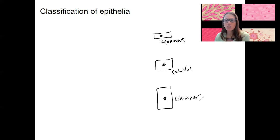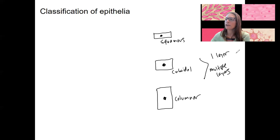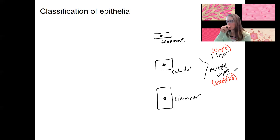For each one of these cell shapes, you could have either a single layer or multiple layers. One layer is called simple — makes some sense. Multiple layers is called stratified, like stratifications. Try to make sense of the words.